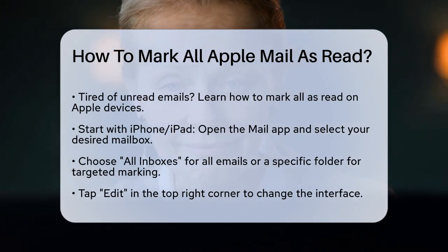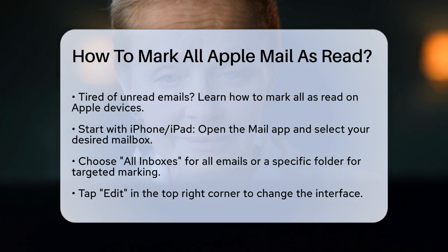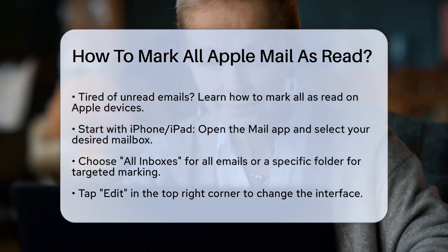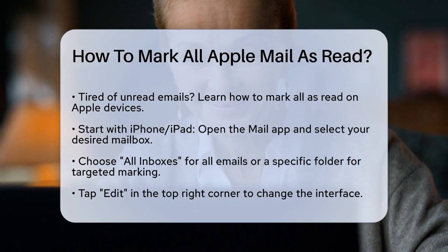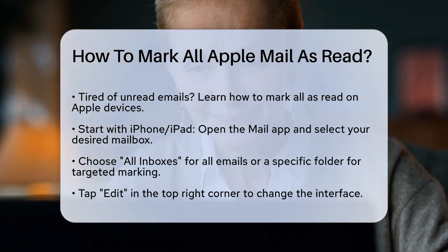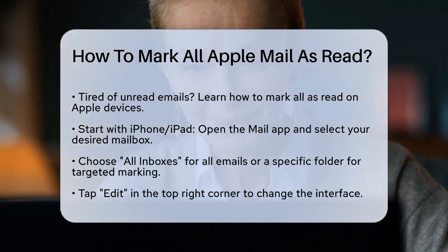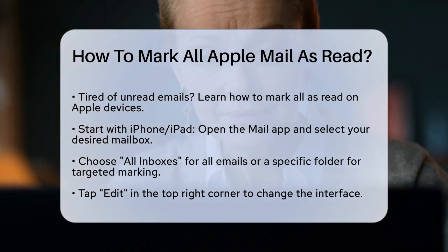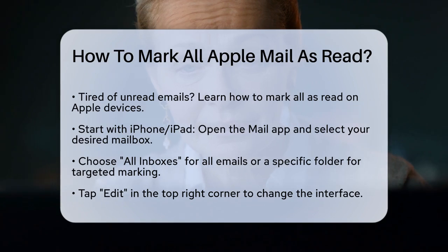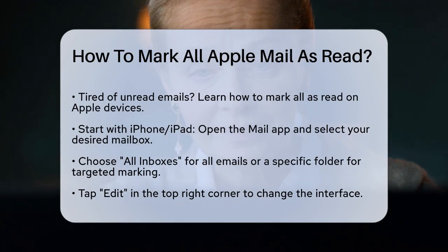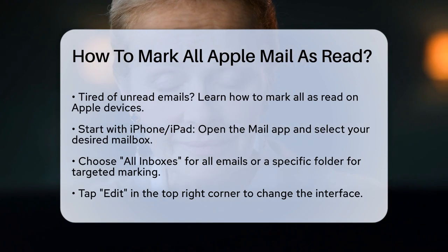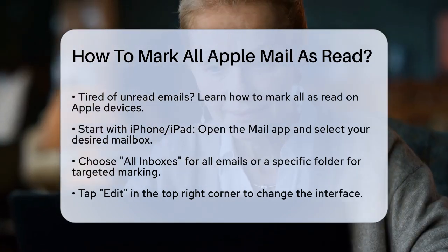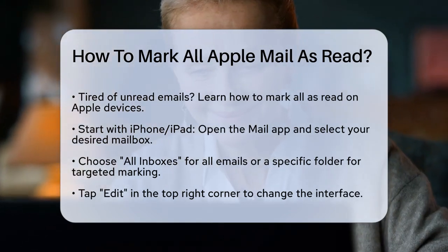First, let's start with your iPhone or iPad. Open the Mail app and select the mailbox you want to work with. You can choose all inboxes to handle all your mailboxes at once, or pick a specific folder if you prefer. Once you're in the mailbox, tap Edit in the top right corner. This will change the interface slightly and you'll see Select All appear in the top left. Tap Select All to highlight all the emails in that mailbox.